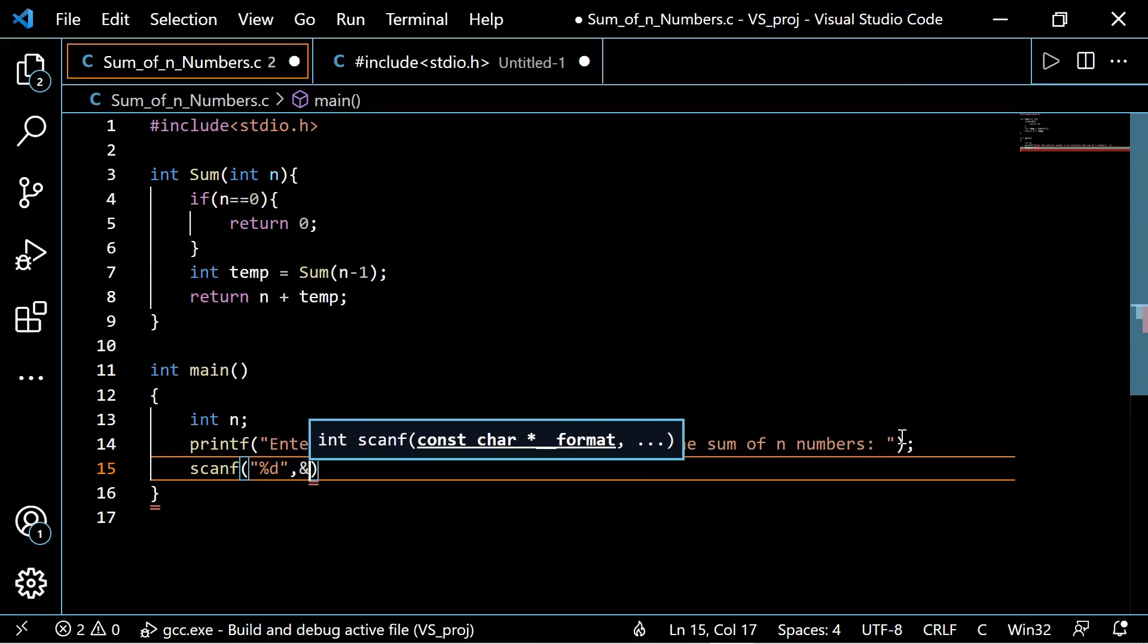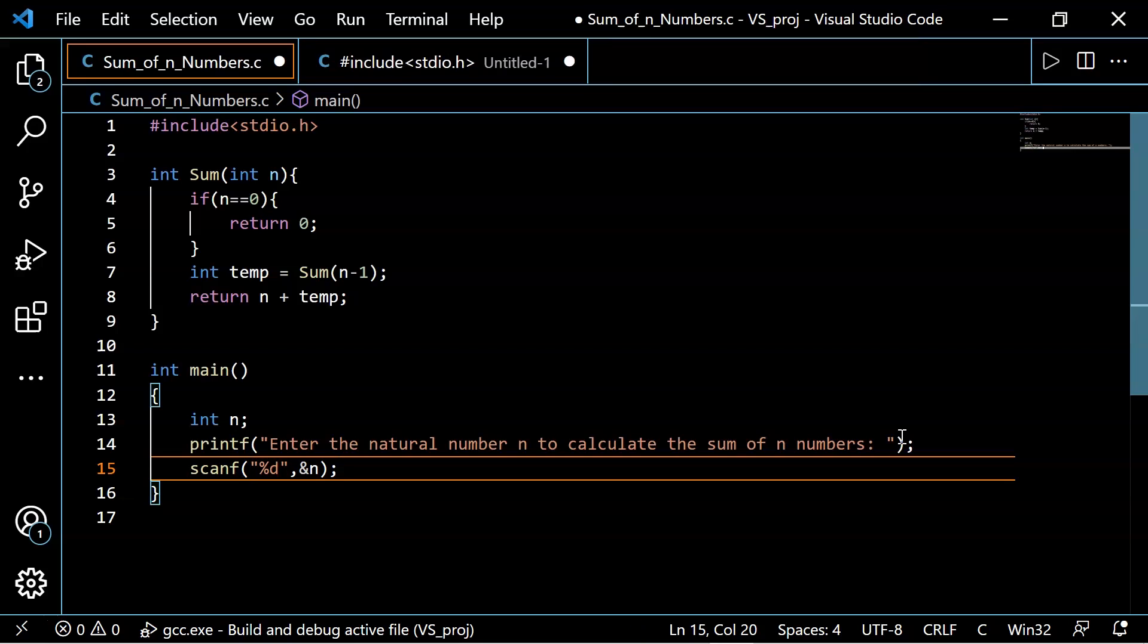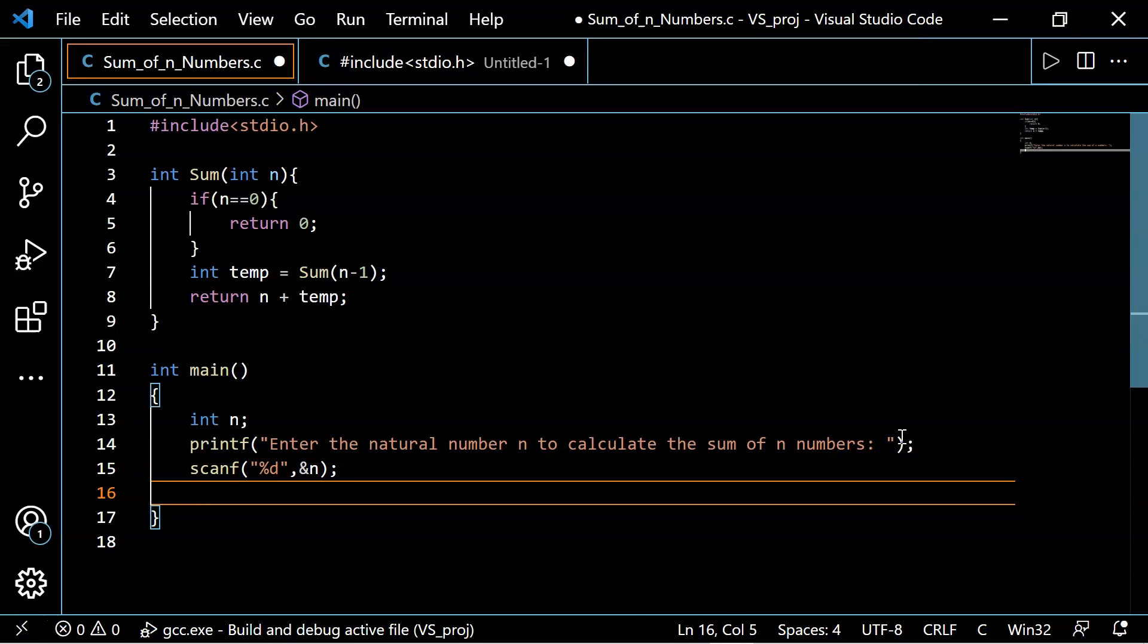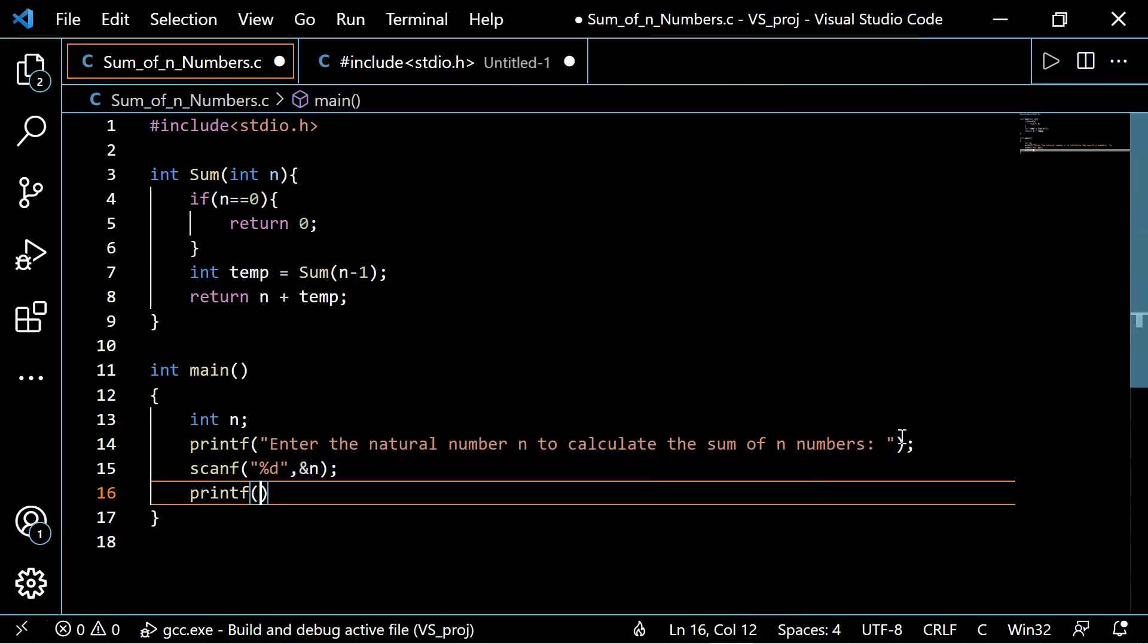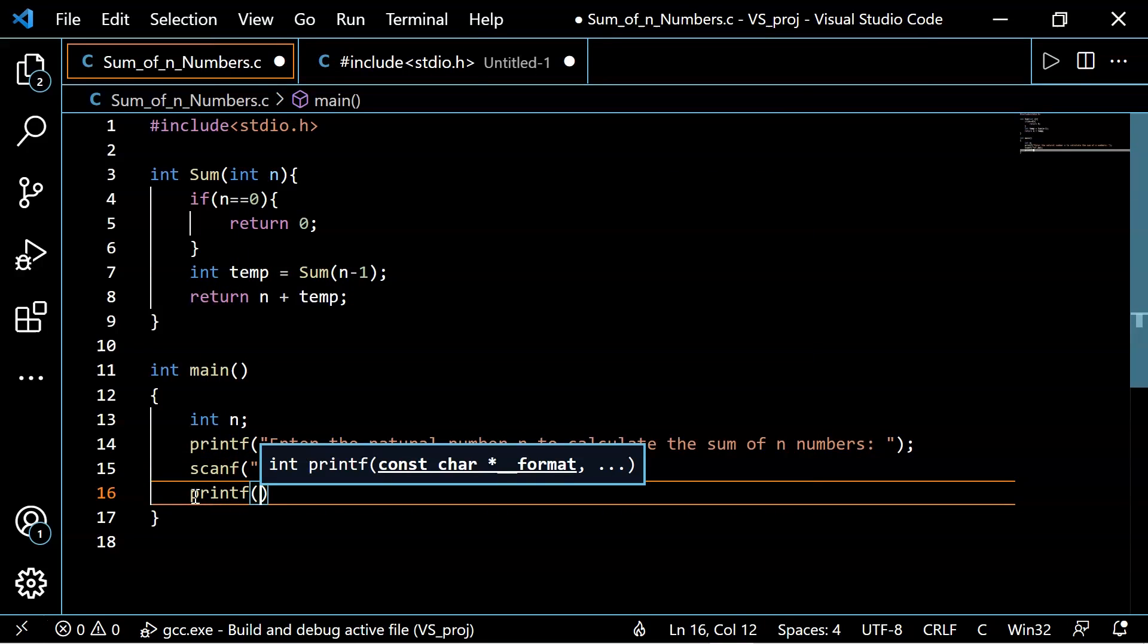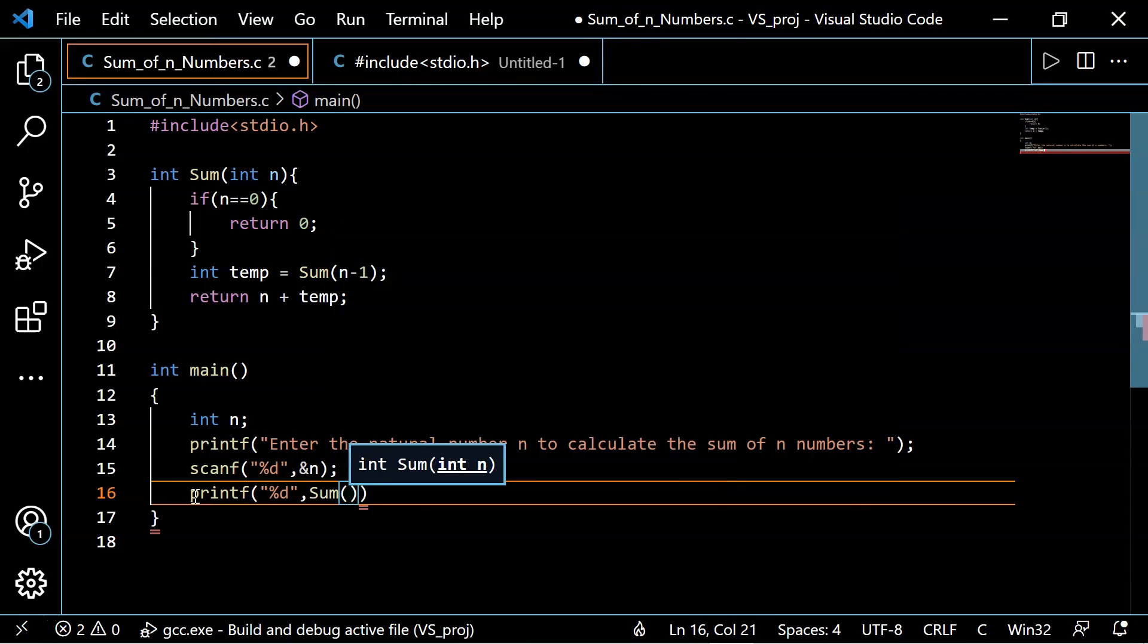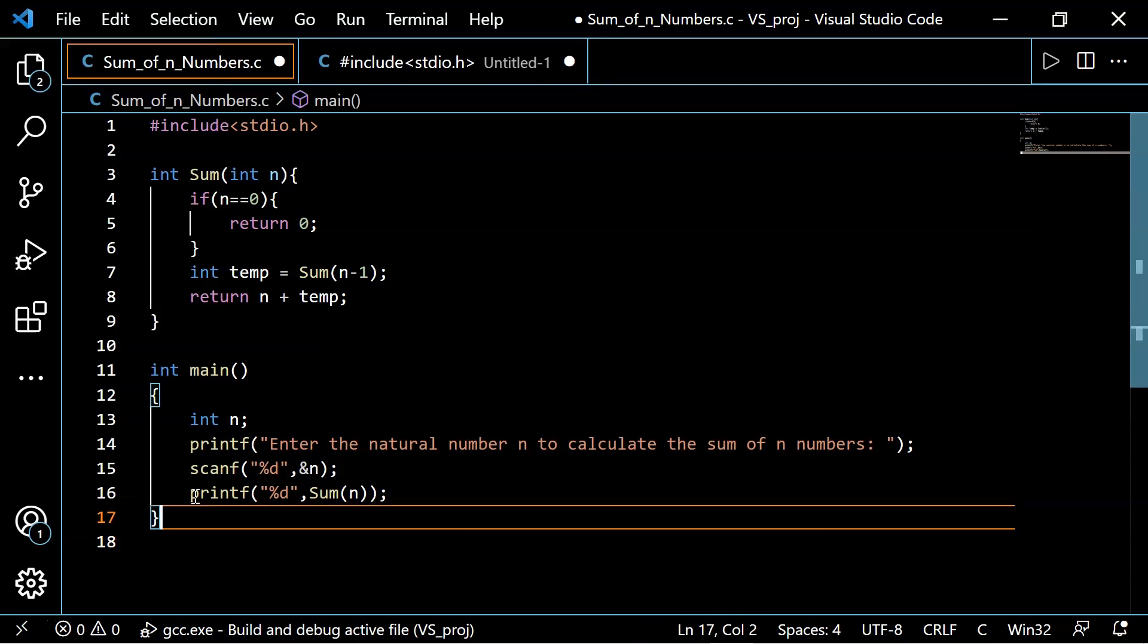And in next statement, we'll make a call to sum function in order to calculate sum of n natural numbers. So how we can do that? Well, we can add printf with %d here, comma, sum of n. And I hope our code works fine now. So let's check it by compiling.